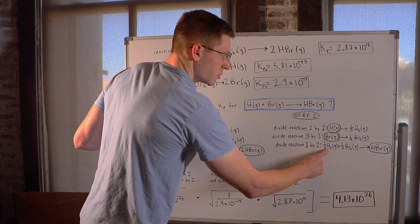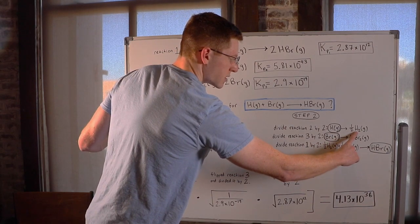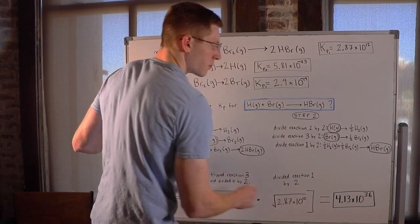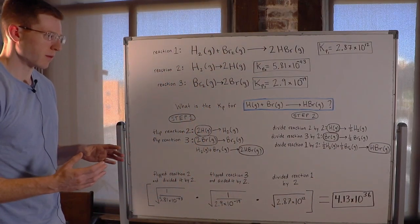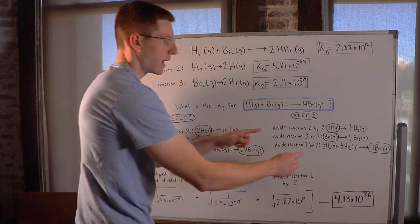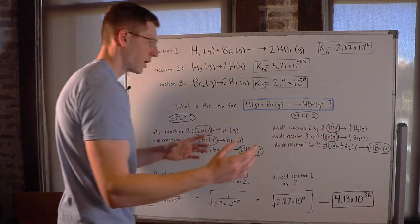And then since 1 half H2 appears on both sides of the reaction arrow, it cancels out. 1 half Br2 also appears on both sides of the reaction arrow, so it will cancel out. So when I add the reactions together in this manner, after manipulating them like I did, I end up with my reaction in the blue box here.